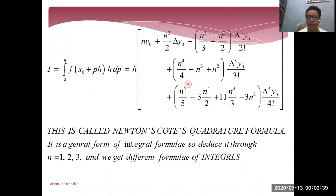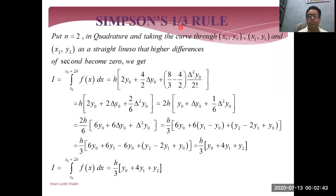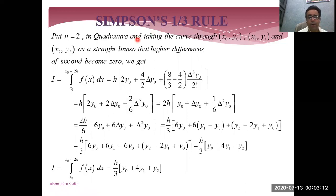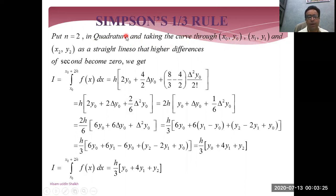In this quadrature, first of all, Simpson's one-third rule — because there are two formulas: Simpson's one-third rule and Simpson's three-by-eighth rule. When we put n equal to two, the quadrature is based upon three points: x0, y0; x1, y1; and x2, y2. Higher differences after the second will be zero in the quadrature.